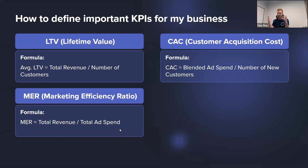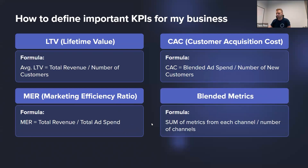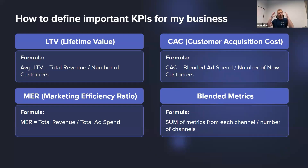Marketing efficiency ratio — blended ROAS, whatever you want to call it — is total revenue divided by total ad spend. How much revenue did my Shopify store do? How much did I spend across all marketing channels? How efficient am I? And for blended metrics, you can also look at specific metrics for each channel and average those. It's important to look at the holistic view of that cost.